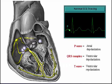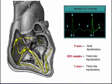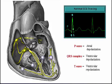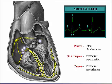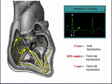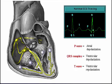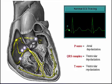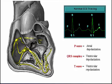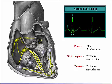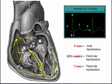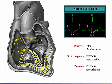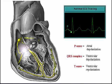These diagrams show the correlation between heart electrical activity and an ECG wave tracing. The P wave represents atrial depolarization, which is followed by atrial contraction. The QRS complex represents ventricular depolarization, which is followed by ventricular contraction. And the T wave represents ventricular repolarization, which is followed by ventricular relaxation.